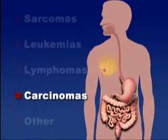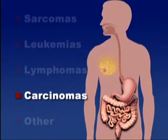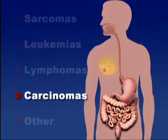Carcinomas, the most common cancers, arise in the body's organs. About 80% of all cancers are carcinomas. Examples are cancers of the breast, prostate, stomach, colon, and as the skin is an organ, also include squamous and basal cell skin cancers.